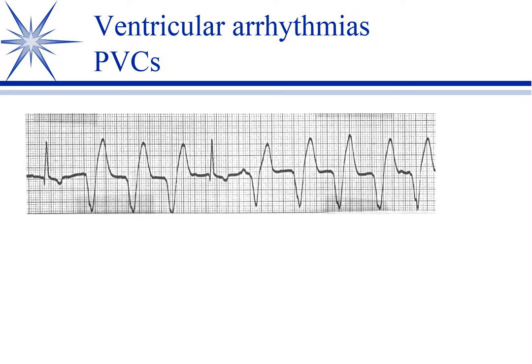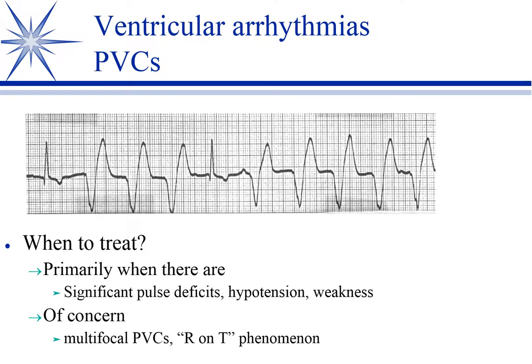We don't routinely treat PVCs. We used to reach for an antiarrhythmic at the sight of a couple of PVCs, but we now know we sometimes cause more problems than we cure. Nearly all antiarrhythmic drugs are arrhythmogenic — they can cause arrhythmias themselves. We look for pulse deficits, hypotension, and weakness in addition to PVCs before we intervene. I get more concerned when seeing multifocal PVCs and R-on-T phenomena — then I'm much more likely to intervene.